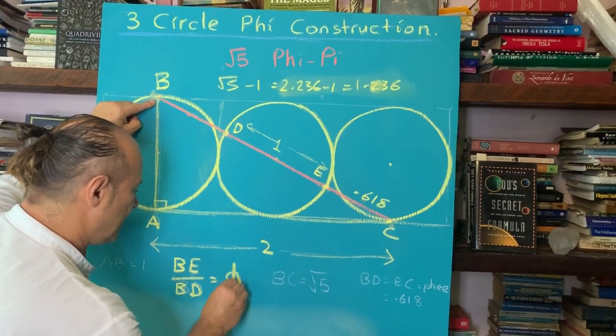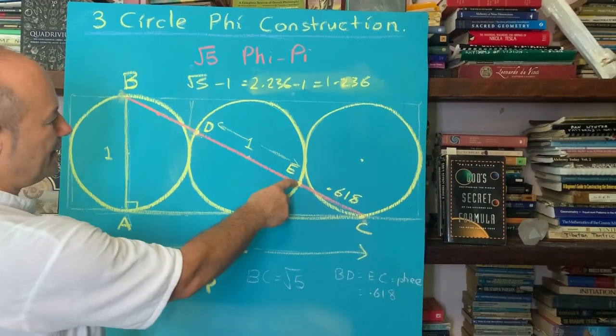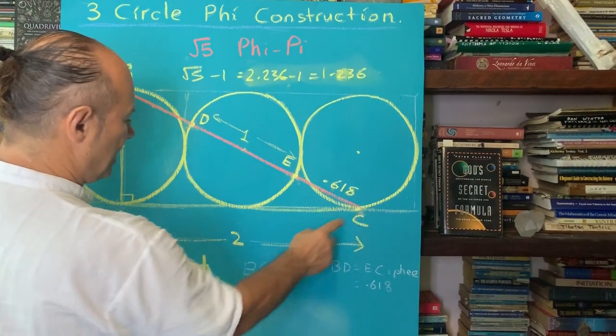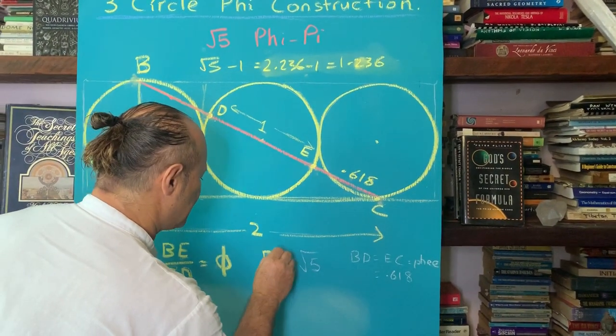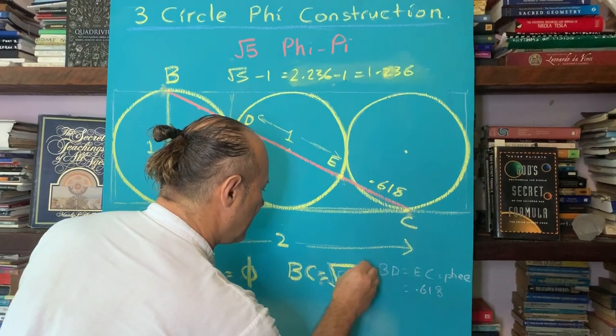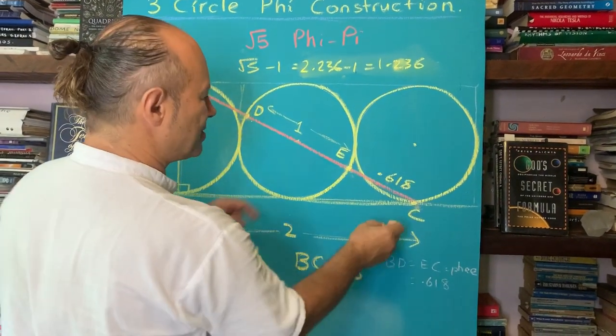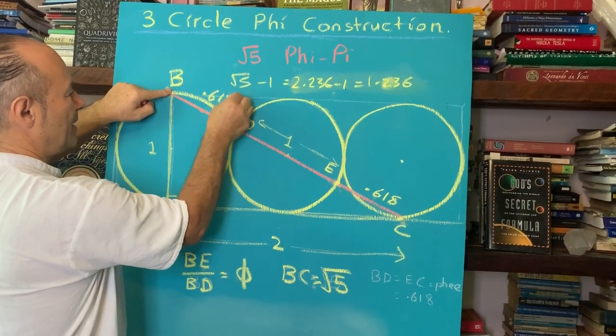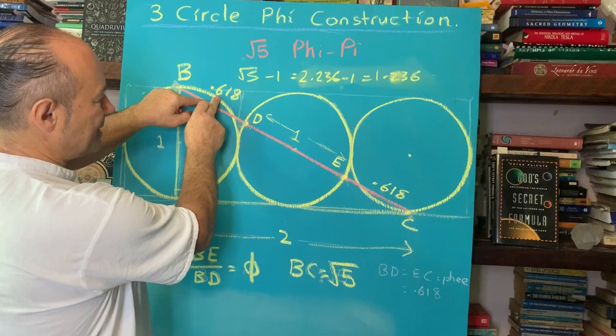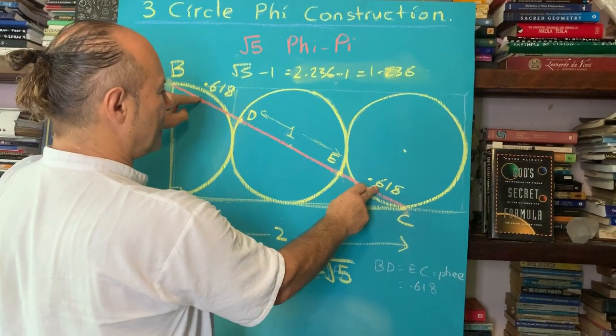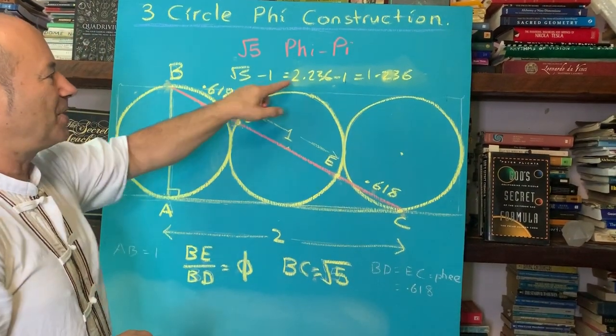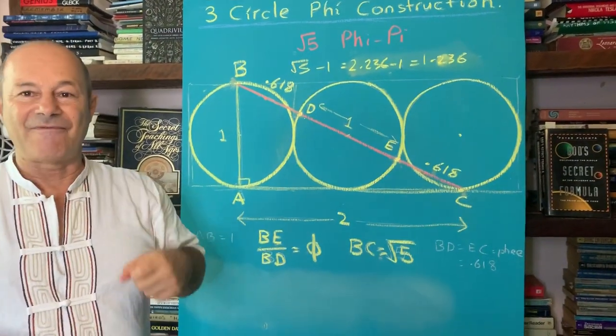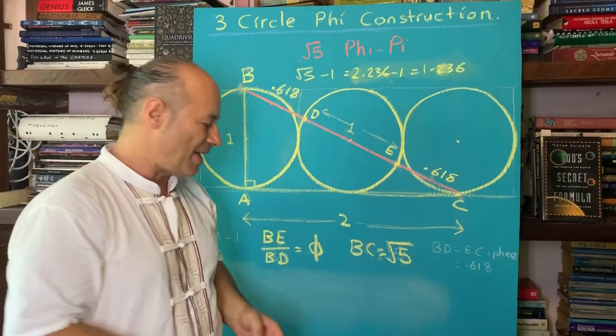equals Phi. So we know that Phi... This is 1.618. This is 0.618. And we know that B... The whole length is root 5. We know that B C equals root 5. And we establish that E C and B D is 0.618. So that means 1 plus 0.618 plus 0.618 again gives us 2.236, which is root 5. So I just think that this is essentially a very important mathematics.